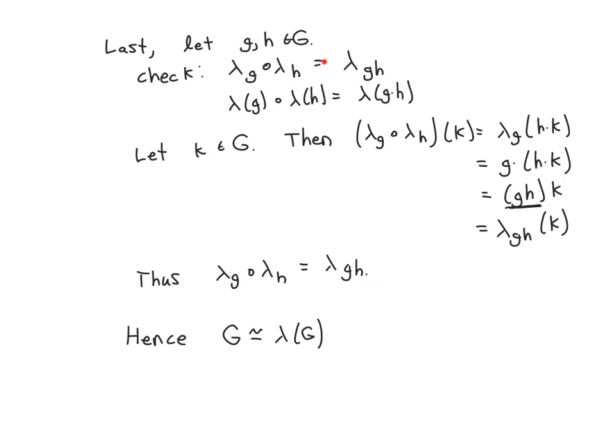So, because that's what it means for this function we just defined to preserve products. Well, let's look at these two permutations on both sides. Let's see what happens when you take an element in G, let's call it K, and let's compute these permutations and what they do to K.